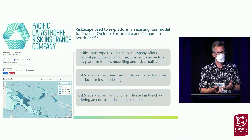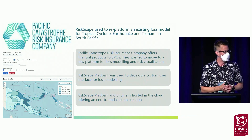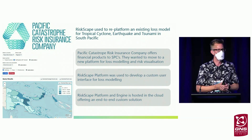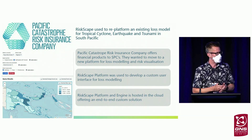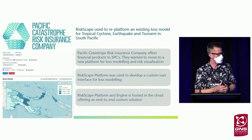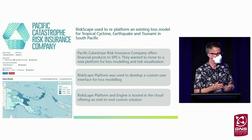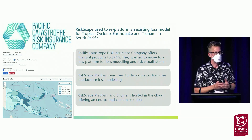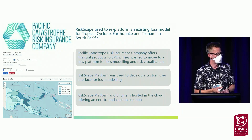Recently we used RiskScape to deploy an earthquake and a tropical cyclone model for the Pacific Catastrophe Risk Insurance Company, which offers insurance to South Pacific countries. RiskScape was used to develop a new platform with a custom interface for risk visualisation. This example shows estimates of risk for Papua New Guinea across different regions, and this information helps South Pacific countries develop national-level insurance following events.